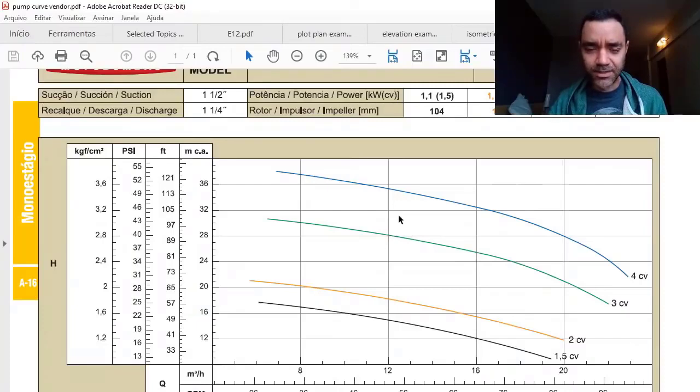Eventually, if I have a margin in my pump to change the impellers, I can consider having the same pump by only buying another impeller and now use this curve here.